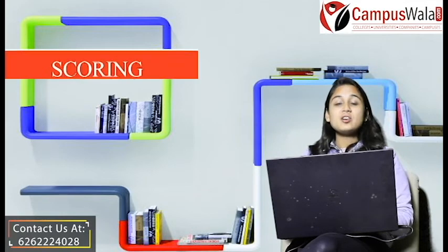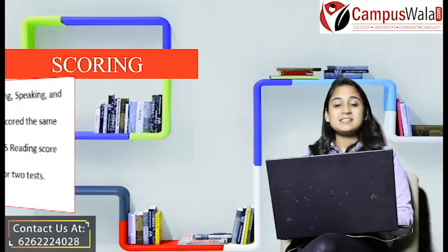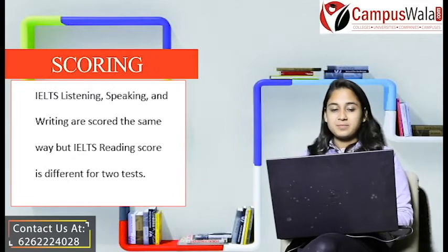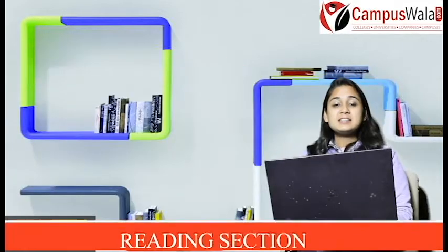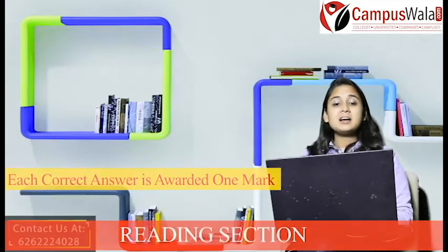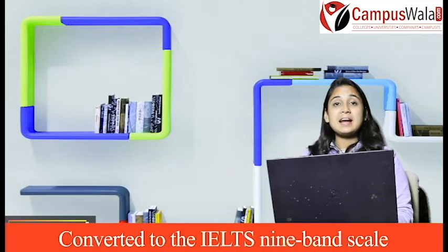Number four is the scoring. The two exams differ in how they are scored. IELTS Listening, Speaking, and Writing are scored the same way, but the Reading score differs between the two tests. In the Reading section, the test contains 40 questions and each correct answer is awarded one mark. Scores out of 40 are then converted to the IELTS nine-band scale.